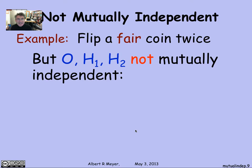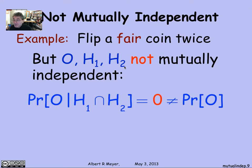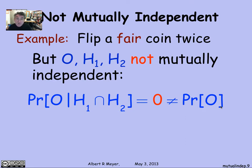But notice: if you look at O, H1, and H2 together, the three of them are not mutually independent, because if you know any two of them you can figure out the third. Explicitly, the probability of an odd number of heads given H1 ∩ H2 is zero — once you know both tosses were heads, there are two heads, which is not odd. That's zero, not equal to the probability of O alone which was one-half. So the three events are not mutually independent, even though any two of them are.